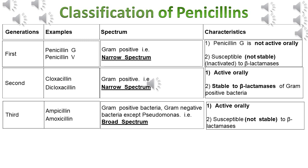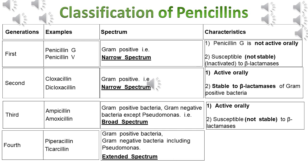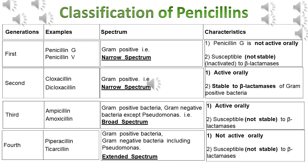As we know, Pseudomonas causes hospital infections. Therefore came the fourth generation of penicillins. Example: Piperacillin. Spectrum of activity is extended spectrum — kills gram-positive bacteria, gram-negative bacteria, including Pseudomonas. Characteristics: not active orally and susceptible to beta-lactamases. Advantages: kills gram-positive, gram-negative bacteria including Pseudomonas and anaerobes, so can be used for hospital infections and all life-threatening infections. Piperacillin is available in injectable form, which is advantageous since it is used in hospital infections. Disadvantage: not stable to beta-lactamase, so cannot be used in resistant hospital infections.